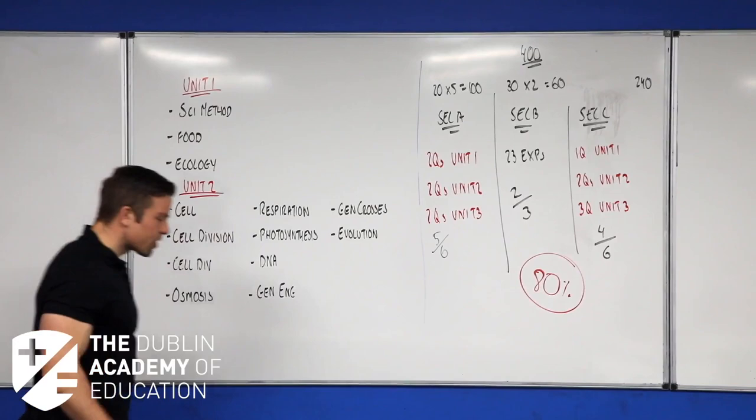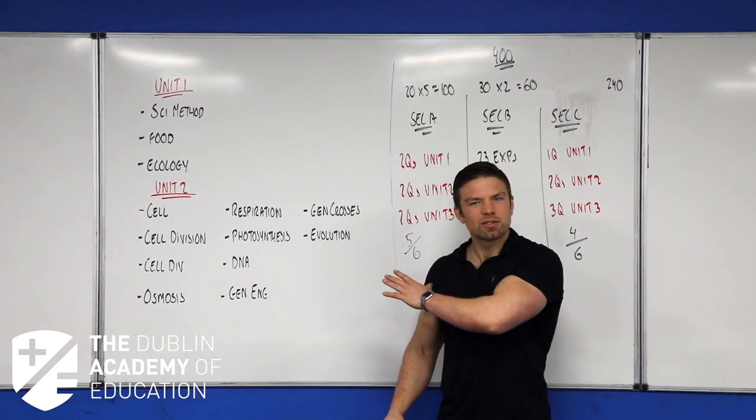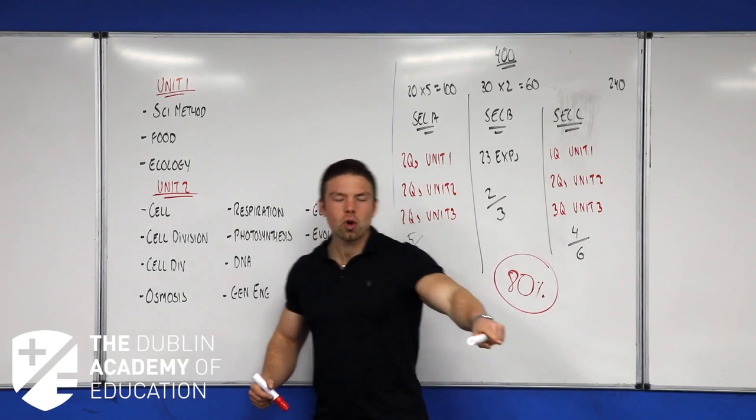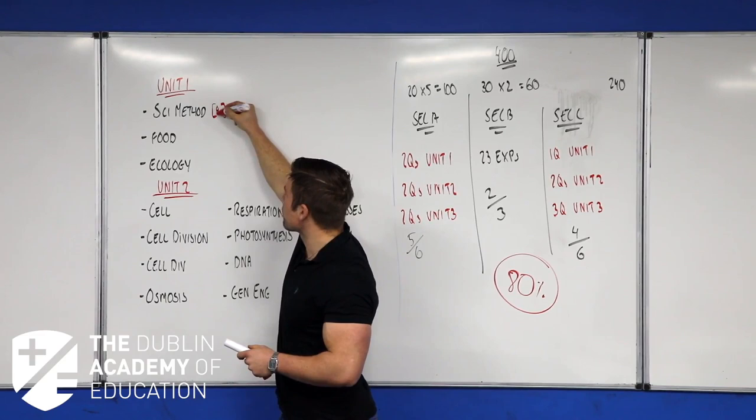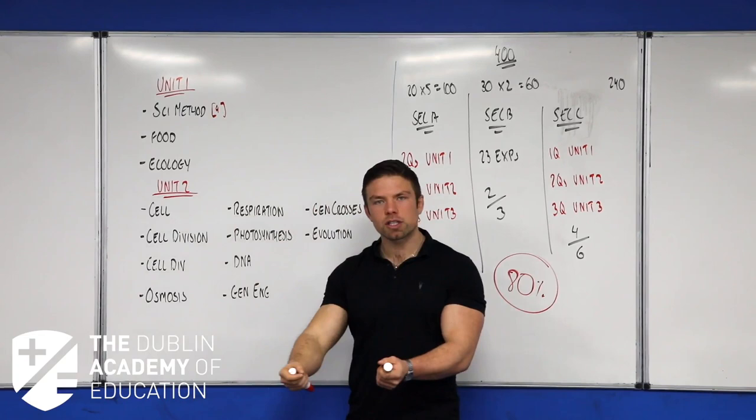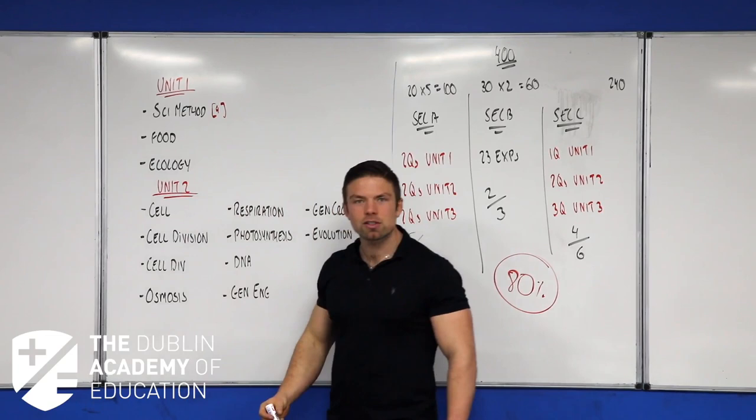Unit 1 has three topics, but realistically there are two main ones. Scientific method is in your notes — it comes up every year for a certain number of marks; in 2019 it was 20 marks, and I'd expect it to be around nine marks going forward. Just make sure you understand words like 'hypothesis' — it will take you around seven minutes.